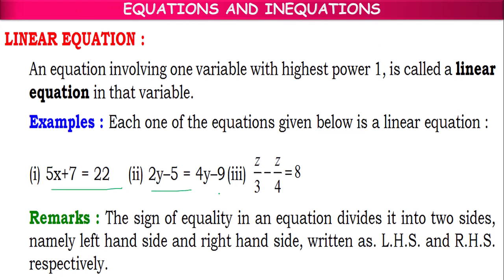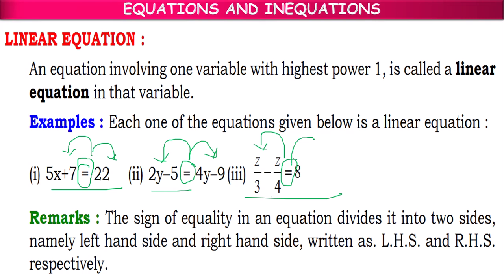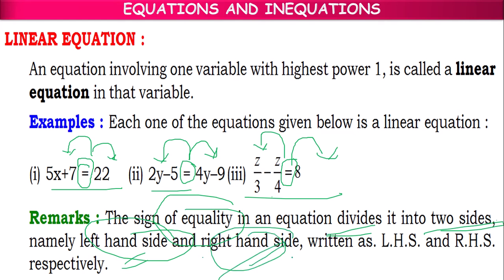In these equations, we have a sign of equality which divides each equation into two parts. Before the equality sign is the left hand side, LHS; after the equality sign is the right hand side, RHS. The sign of equality divides it into two sides — one is left hand side and another is right hand side, represented by LHS and RHS respectively. In an equation, LHS part is always equal to RHS part.